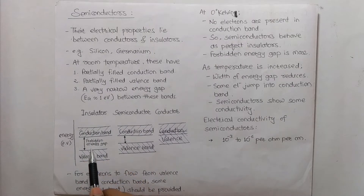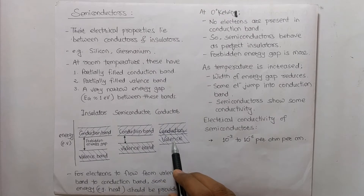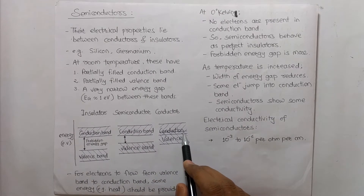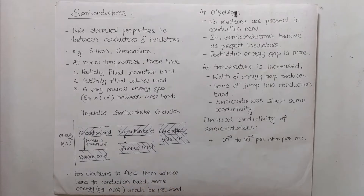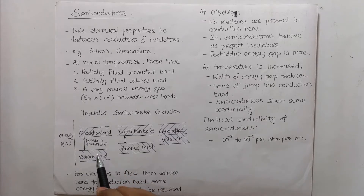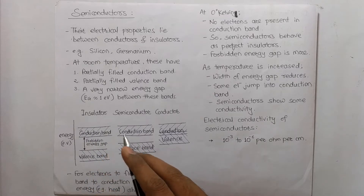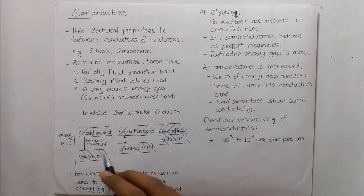For an insulator, the gap between the conduction band and valence band is more. In a semiconductor this gap is less, and in a conductor the conduction and valence bands overlap each other. When the forbidden energy gap is more, electrons must flow from the valence band to the conduction band for the material to be in a conduction phase.